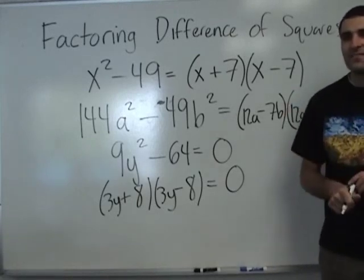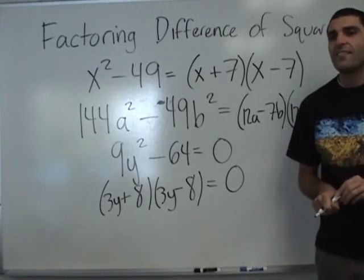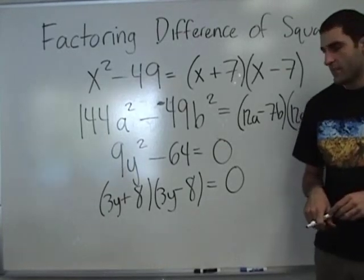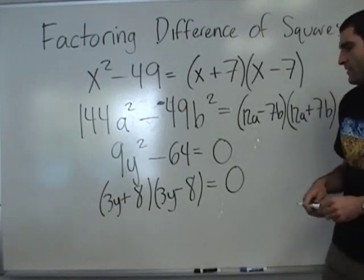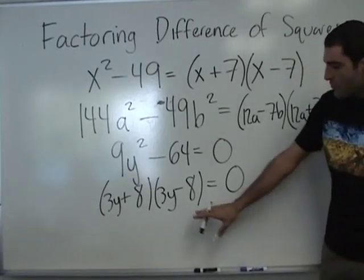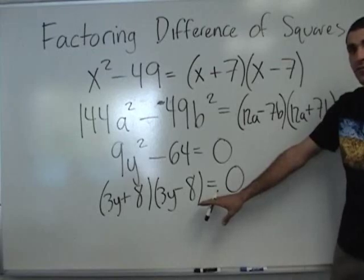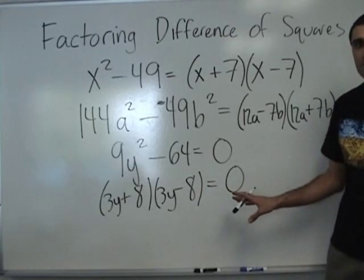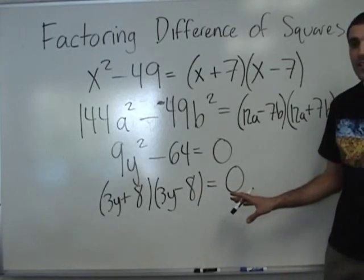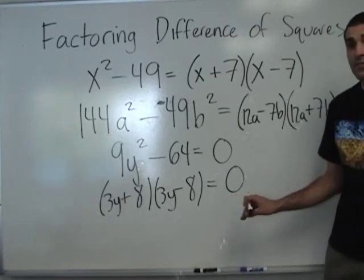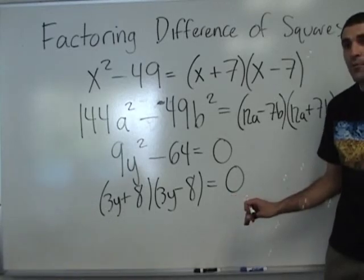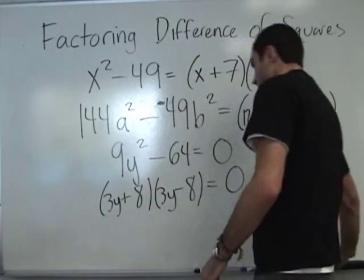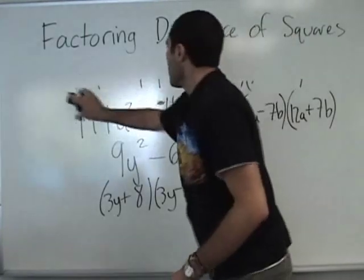With difference of squares, does it always have to be plus and minus? Yes — or minus plus. The signs are different. Do you remember how to solve when you have a factored equation equal to 0? What do you do to each factor? Make each one equal to 0.